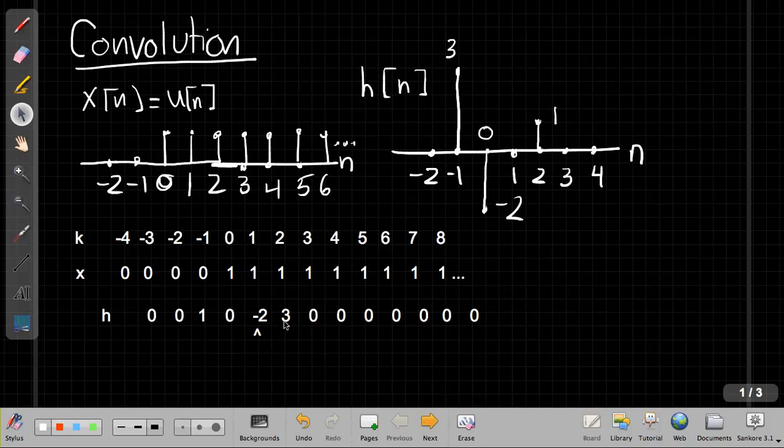Moving along to the next point, so again, now my arrow is under 1 here, so that tells me I'm finding y at n equals 1. I still have 0, 0, minus 2, plus 3. So it's still, this point is still 1.